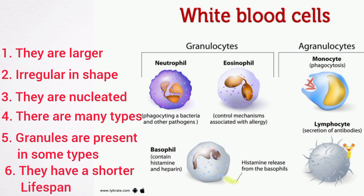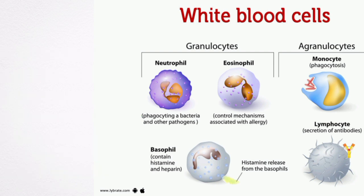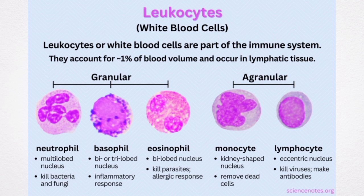Now let's talk about the classification of white blood cells. Based on the presence or absence of granules in the cytoplasm, the leukocytes are classified into two groups. Number one, we have the granulocytes — white blood cells that have granules. Number two is the agranulocytes — white blood cells that do not have granules.